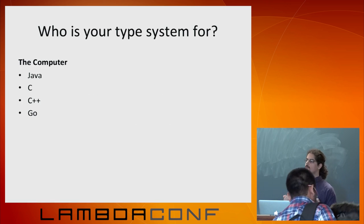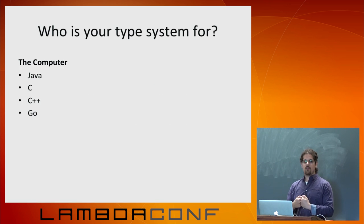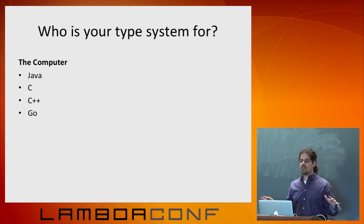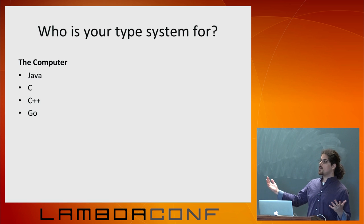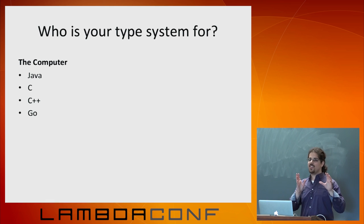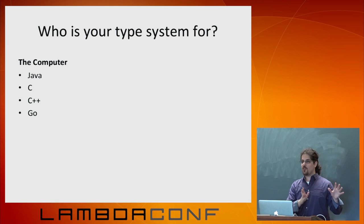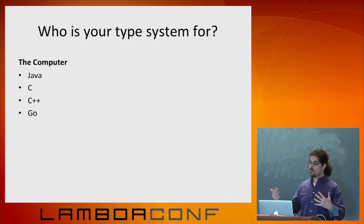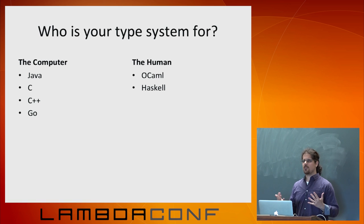The question is: who is your type system for? There are two things your type system could be for. It could be for the computer — things like Java, C, C++, Go. These are languages where the type system's purpose is to let the compiler generate better code. That's the only reason there was a type system. Take Java collections and generics — those aren't even in the actual output of the compiler, because it doesn't care. The goal was how do we make containers for objects, and everything's an object. Done.